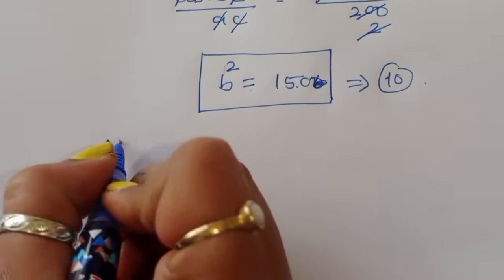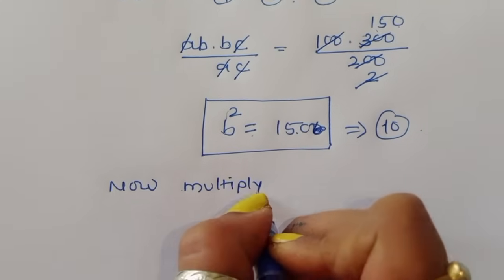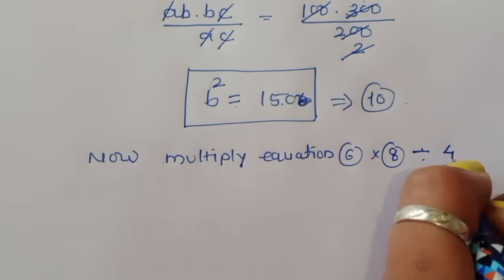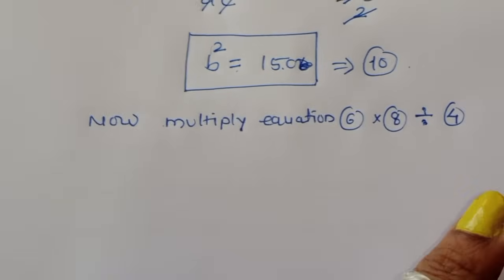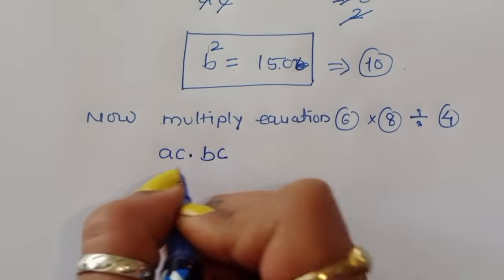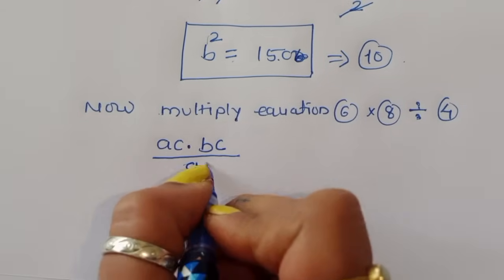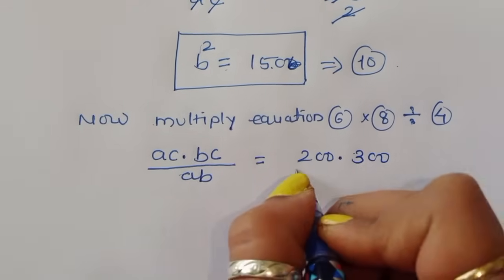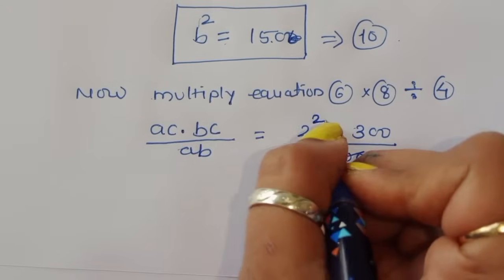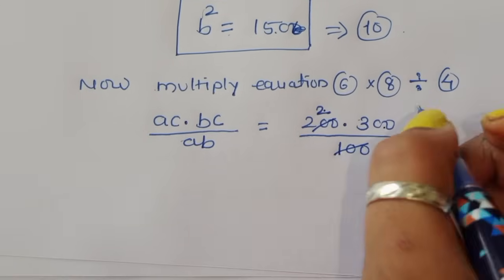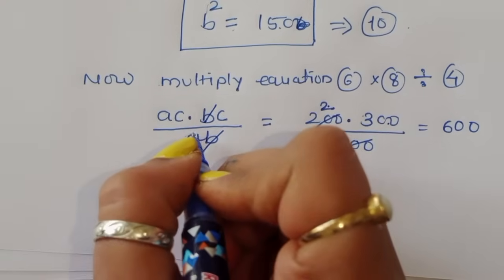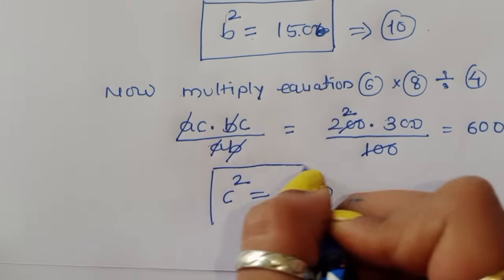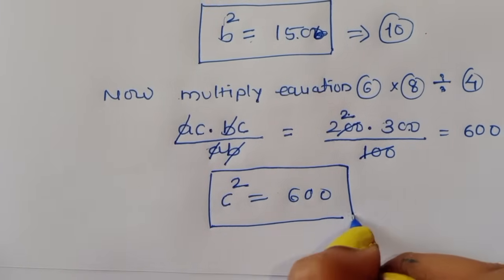Multiply equation 6 with equation 8, divided by equation 4: (AC times BC) divided by AB equals (200 times 300) divided by 100. So 2 times 300 equals 600. Here B cancels from B and A cancels from A, leaving C squared equal to 600. This is equation number 11.